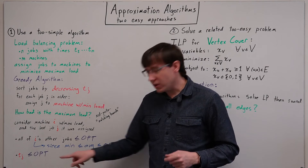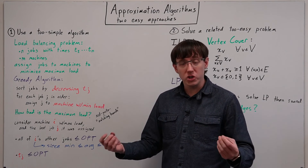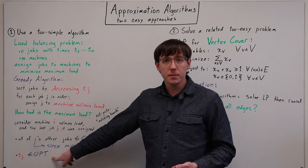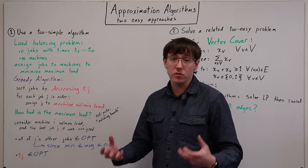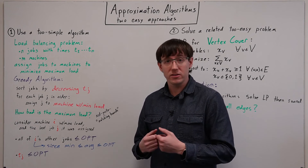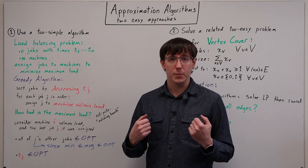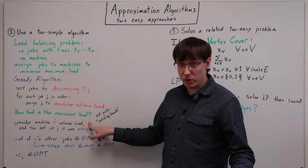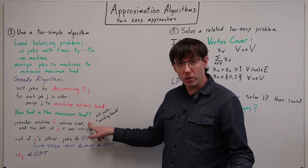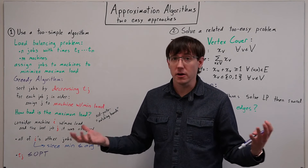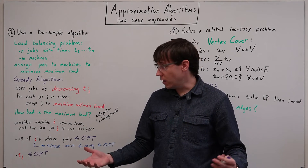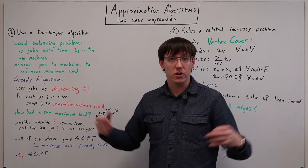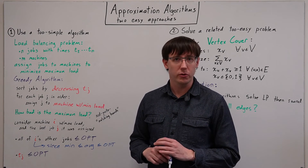So since the two components of the load on machine i are both less than or equal to OPT, that means machine i's total load is less than or equal to twice the optimal load. And since i was the machine with the worst load, that is the cost of our greedy solution, and so we know that the greedy algorithm gets us within a factor of two of the optimal solution.